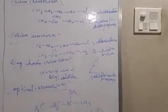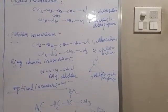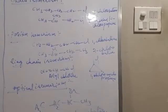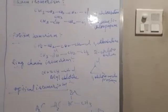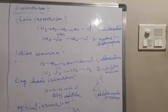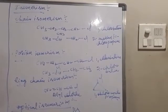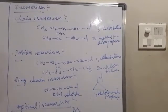Next coming to isomerism. So what is isomerism? Compounds having same molecular formula but differ in the arrangement of carbon atoms or position of the substituent groups. The type of compounds are called isomers and that phenomena is called isomerism.